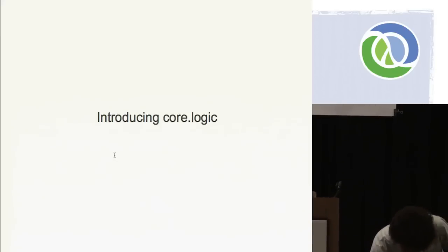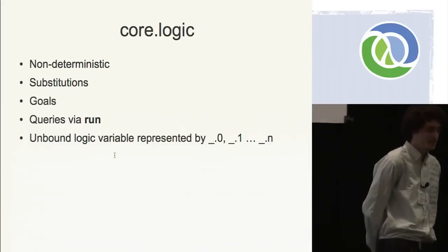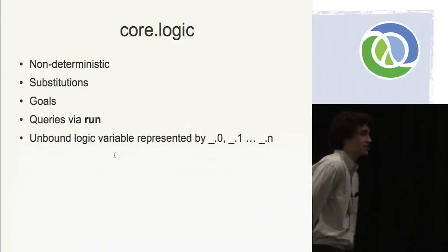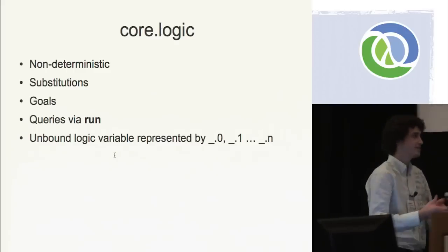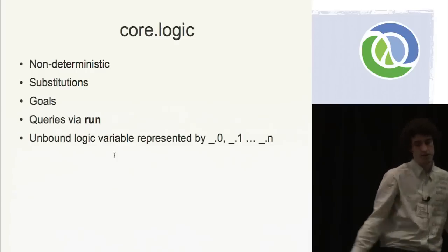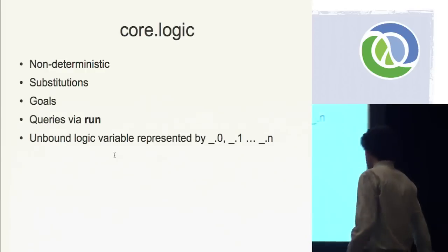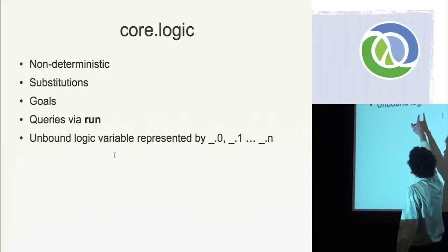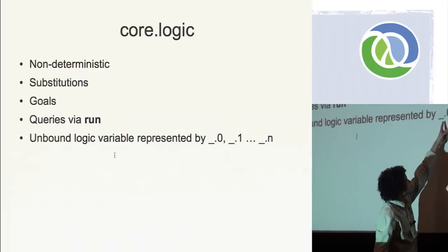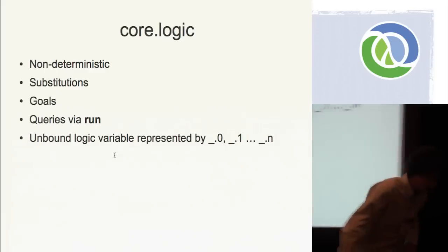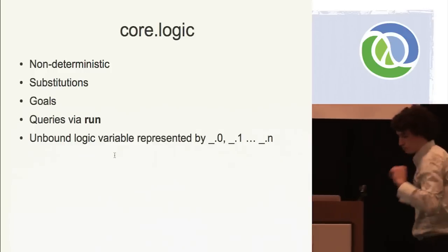We've seen enough to check out some core.logic and make some sense of it. What characterizes core.logic? It's non-deterministic — we can gather zero or more results. It uses substitutions, which represent our state as a snapshot, and it uses goals to get our next states. It's a monadic functional implementation. Two things you need to know: queries are done with the run form, not the solve form I used before. And another quirk is that if a variable is unbound at the end of execution, it's represented by one of these underscore-dot incrementing integer things — like _0. If you see one, it just means the query variable is unbound at that result.